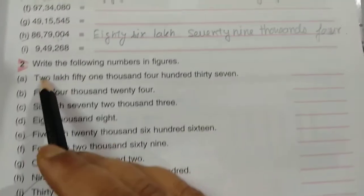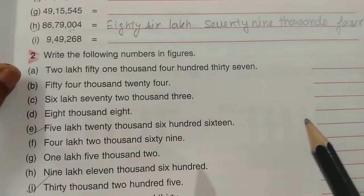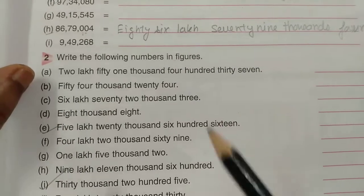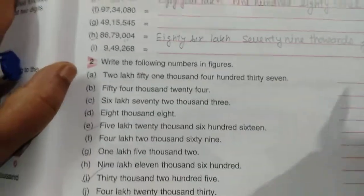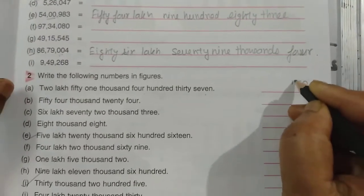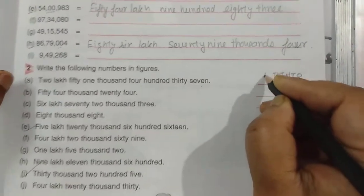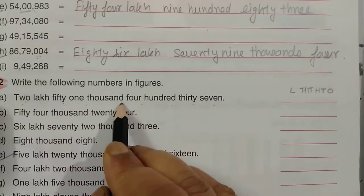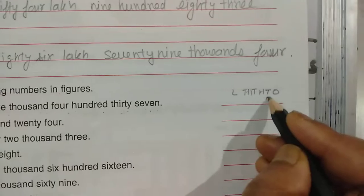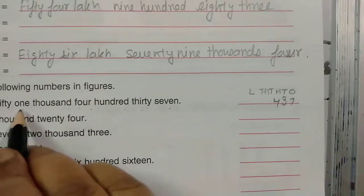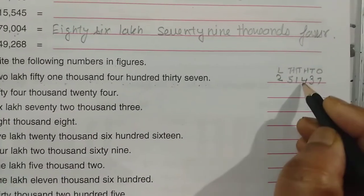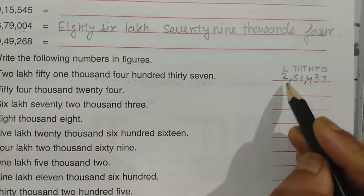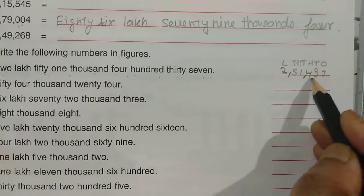Now write the following numbers in figures. Whenever these types of questions come, you should have the concept of ones, tens, hundreds, thousands, everything. For example: two lakh, fifty-one thousand, four hundred thirty-seven. Start with ones, tens, hundreds, thousands, ten thousands, lakh. Write thirty-seven, four hundred, fifty-one thousand, two lakh. Put comma after three digits, then after two — answer: 2,51,437.